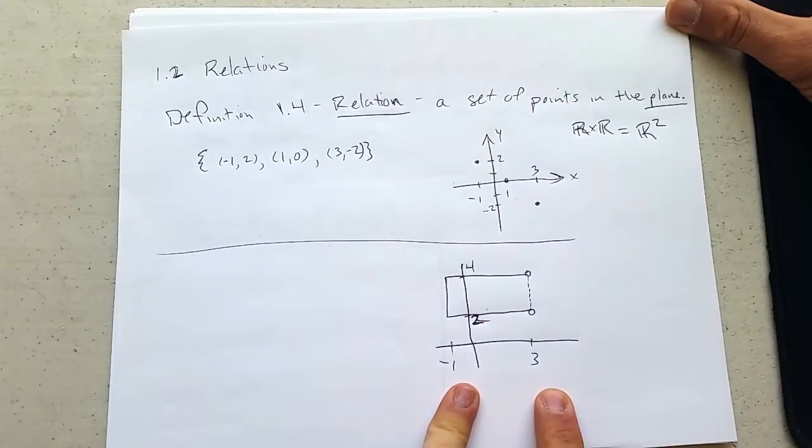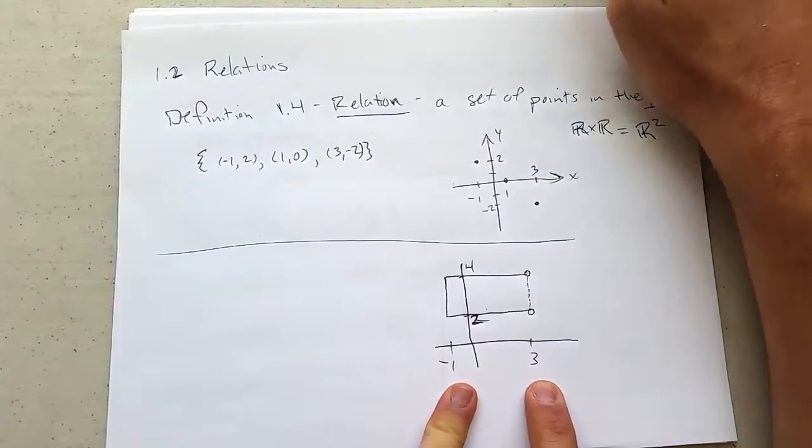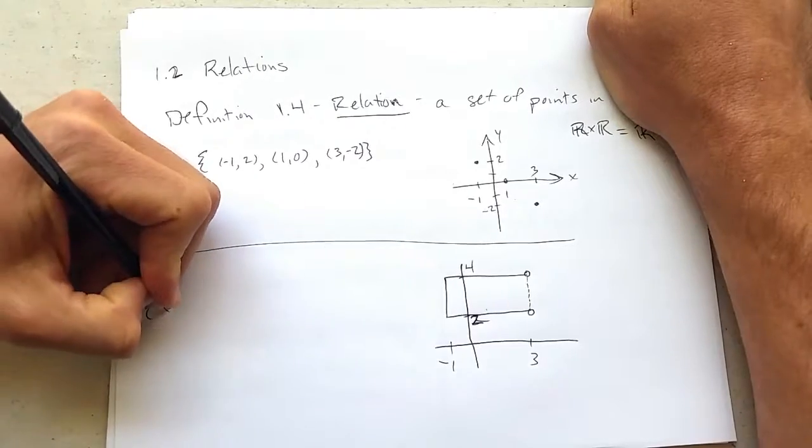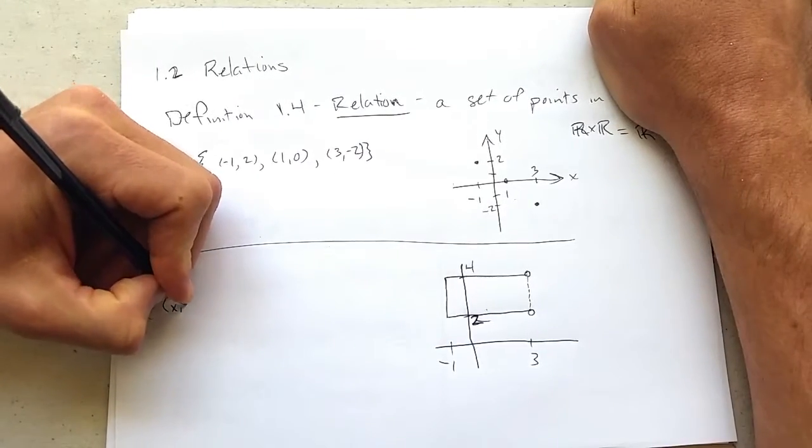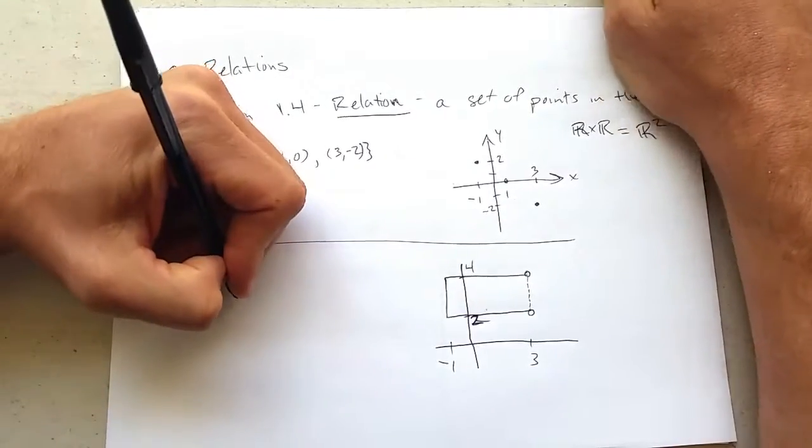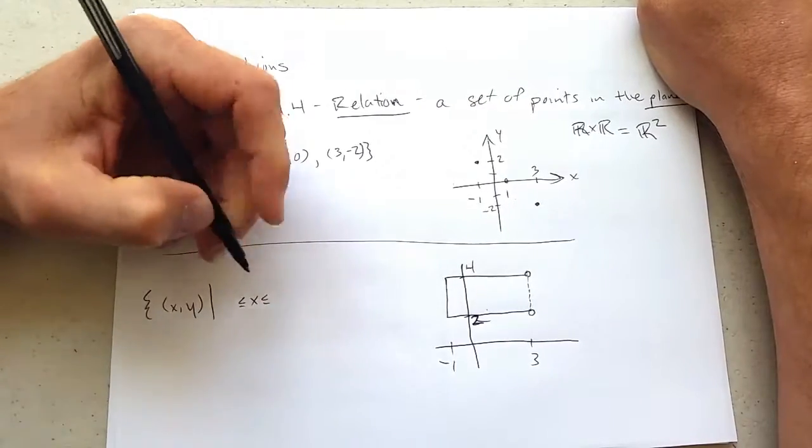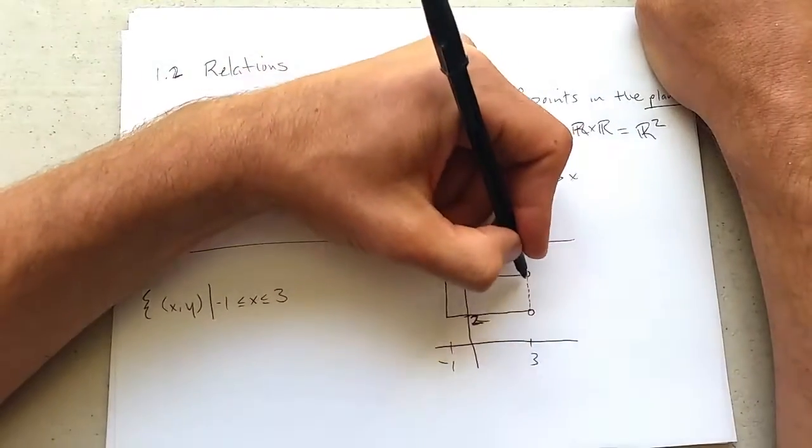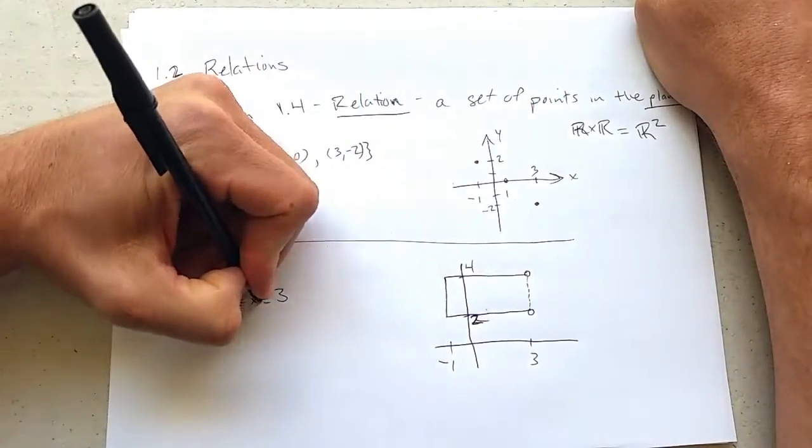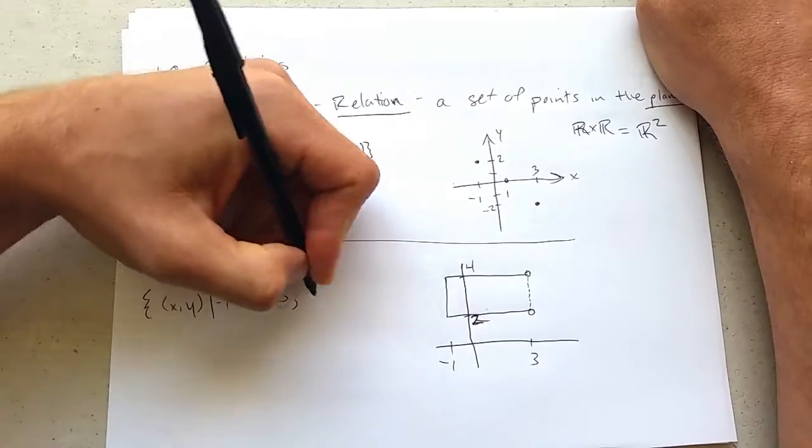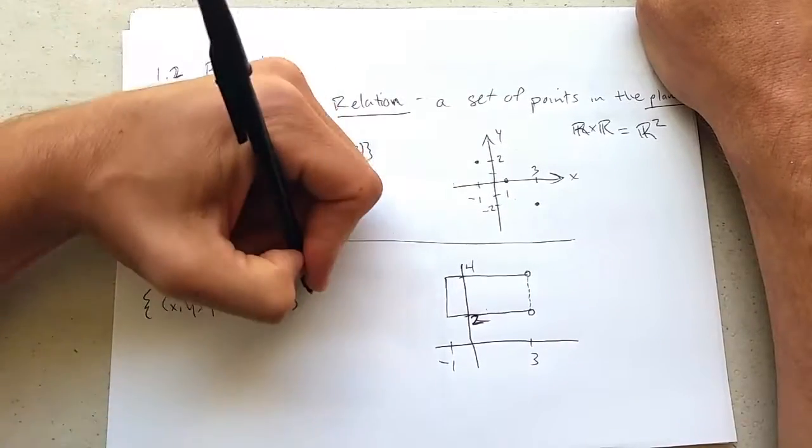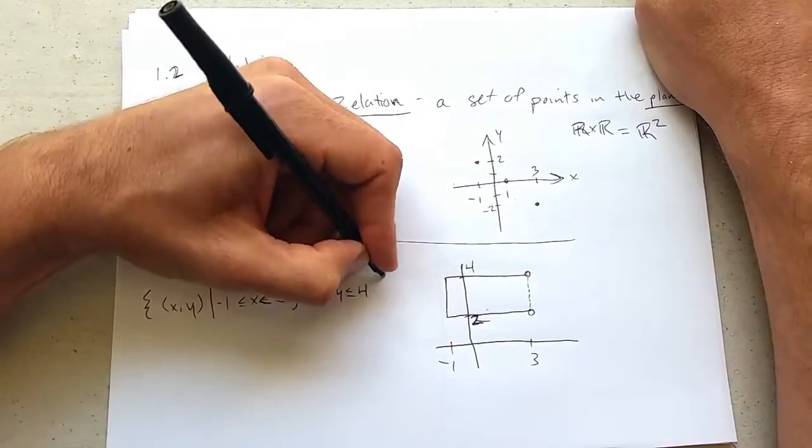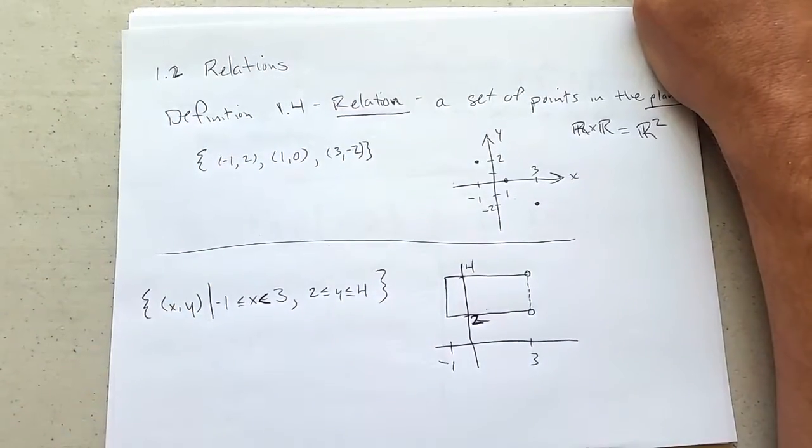So how do we describe this? Well, we can use inequalities. X needs to be between negative one and three, and Y needs to be between two and four. So if I go set builder, I could write X comma Y such that we'll go X is first, X between negative one, three. We're not allowed to equal three. I did a dotted line there. So we want just less than three. And we'll use a comma for and two, less than or equal to Y, less than or equal to four. So there's set builder notation for this.